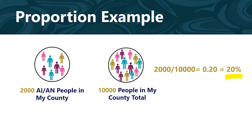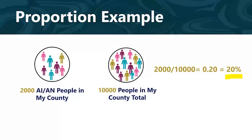Based on the 2010 census, 2,000 people in my county identified as AIAN. The total population of my county was 10,000. Therefore, the total proportion of people in my county who identified as native in 2010 was 20%. To get 20%, I divided the number of natives in my county in 2010, which is 2,000, by the total population of my county in 2010, which is 10,000.